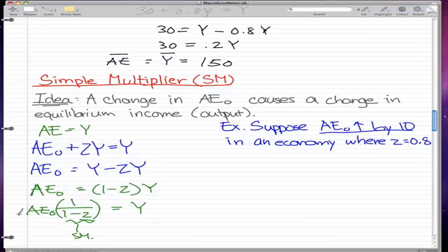When we do this multiplying, we would get that AE would actually be a change in AE0, and this would be a change in Y. This will be further explained with an example that I'm going to do right now.